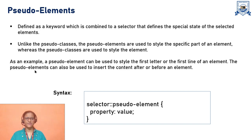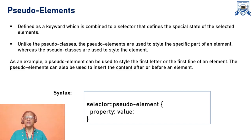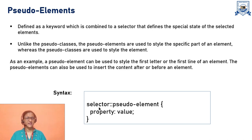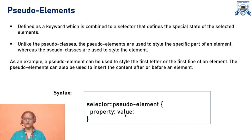A pseudo element can be used to style the first letter or the first line of an element — not the entire block or paragraph. The pseudo element can also be used to insert content after or before an element. It uses a double colon: the selector followed by double colon, then the pseudo element name, then property and value — specifying what effect to give.